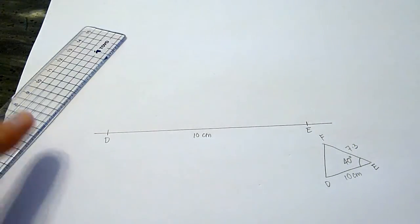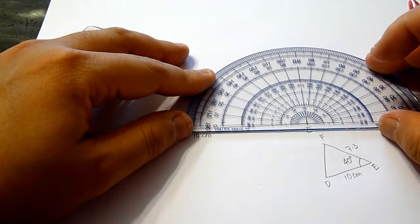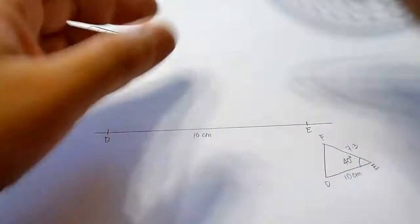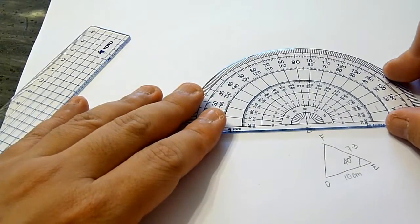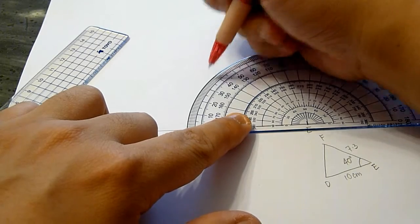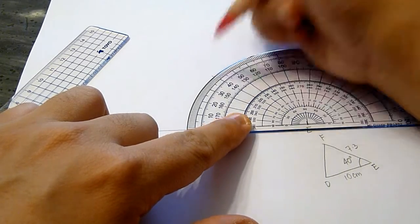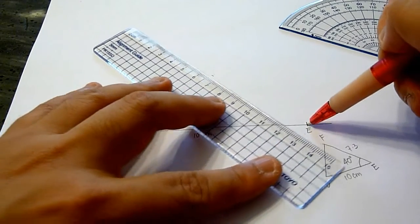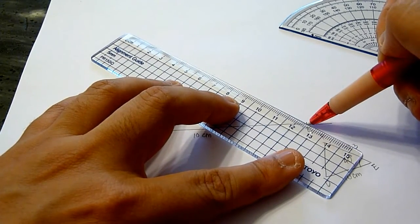Next, given the angle is 40 degrees, we place the protractor such that the center is at E, and we read from the arm here, 40 degrees. And draw the arm of this side of the angle.